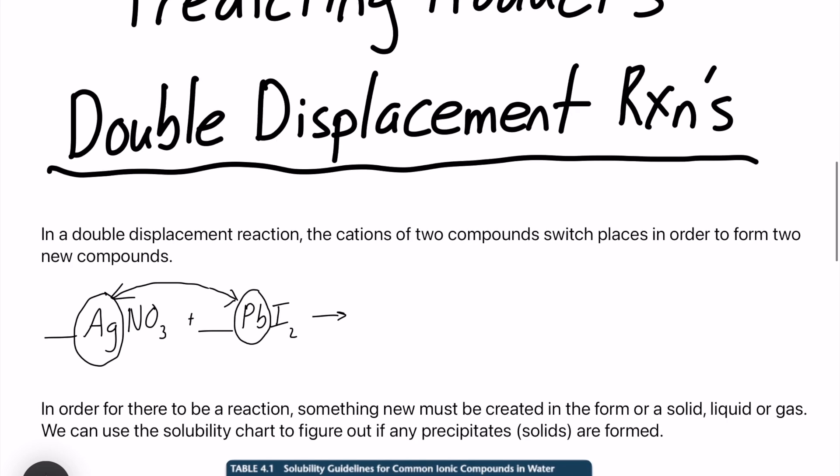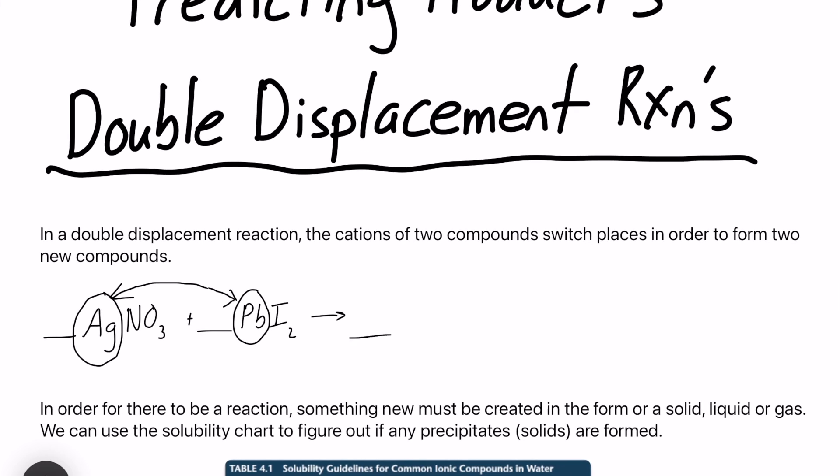So let's write out our products. We're not worried about our solubility chart quite yet. Our first product, I will do silver. So we have silver is now paired up with iodide. And lead-2 is now with nitrate. So we have PbNO3 subscript 2.